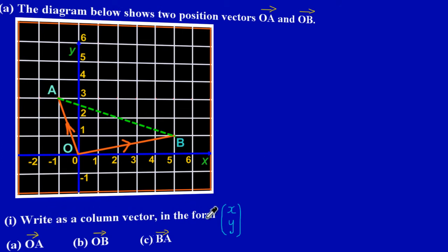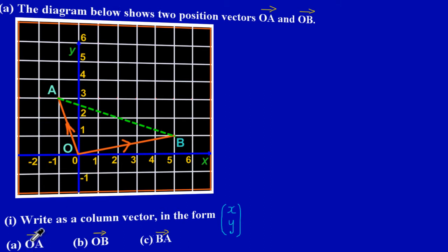They're asking us to write as a column vector in the form x, y: part a is O to A, part b is O to B, and part c they want us to write the vector B to A.